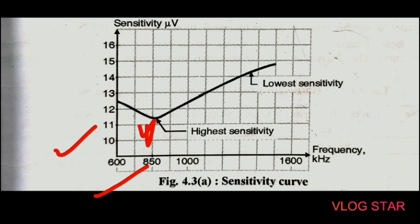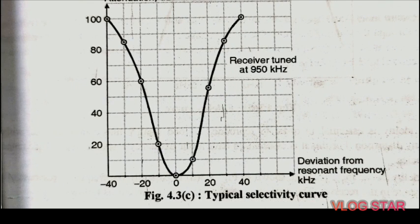At 850 kHz the receiver has the highest sensitivity, which is decided by the gain of the RF and IF amplifiers. At frequencies above 1000 kHz — around 1500 kHz — the receiver has the lowest sensitivity. Sensitivity measurement is carried out under standard test conditions: an AM signal is applied through a standard coupling network known as a dummy antenna, and the output power is measured by replacing the loudspeaker with an equal value load resistance. In short, sensitivity is the ability of the receiver to amplify weak signals.